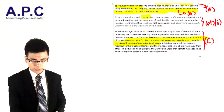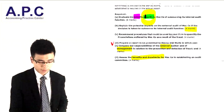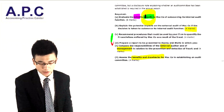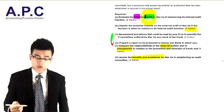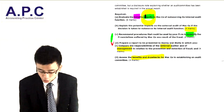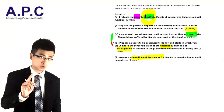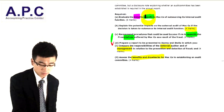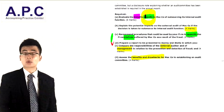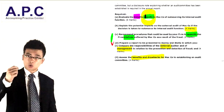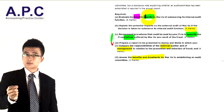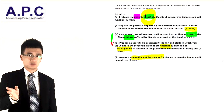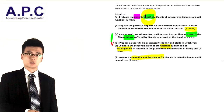Before looking at the answer for Part C, review the requirement again: recommend procedures to be used by your firm to quantify the losses. You're only required to quantify the losses — nothing more. You need to establish how much money has been lost as a result of this fraud.